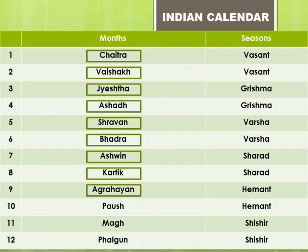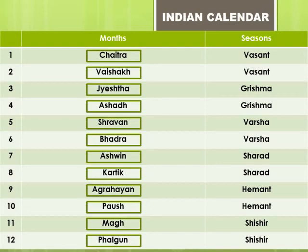Agrayan — A-G-R-A-H-A-Y-A-N, Agrayan. Paush — P-A-U-S-H, Paush. Magh — M-A-G-H, Magh. Falgun — P-H-A-L-G-U-N, Falgun.